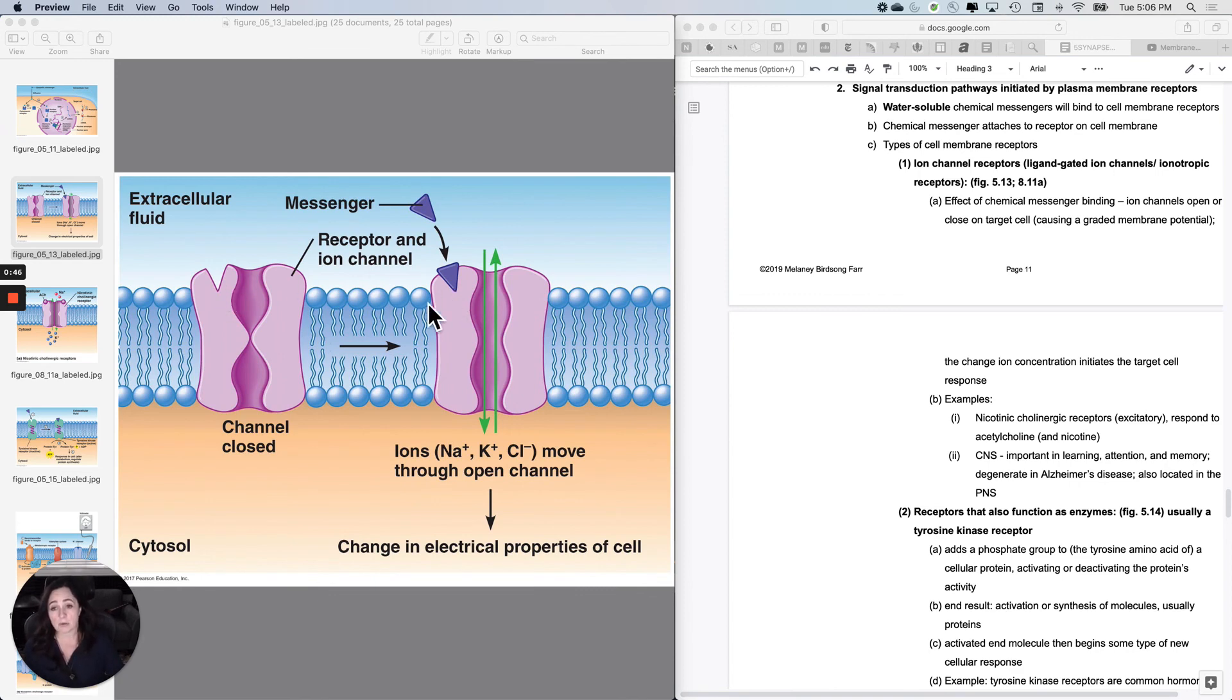It is a receptor for a chemical messenger that is also a ligand-gated ion channel. These are commonly called ionotropic receptors, and they cause the fastest postsynaptic cell response.